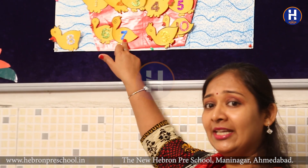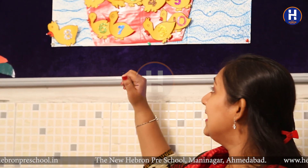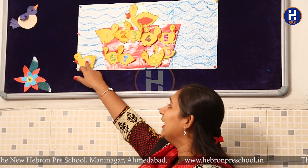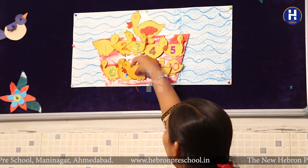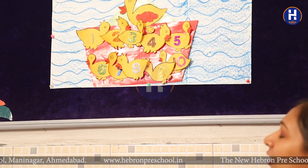What comes after seven? Seven ke baad kaunsa number aata hai? Yes, it is number eight — her eighth duckling was missing. She looked here and there and saw the duck on the left side of the river, took it and put it at the proper place. So by telling this story I have explained the concept of after numbers — is story ke zariye after number ka concept aapko samjhaya. Did you like this story?